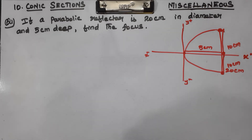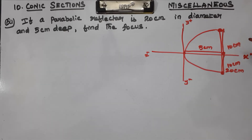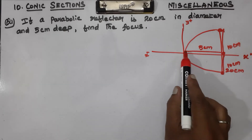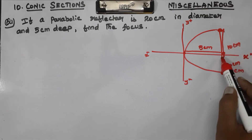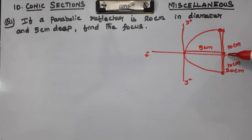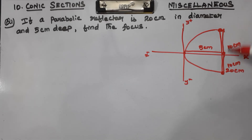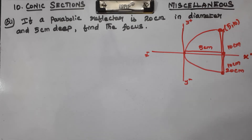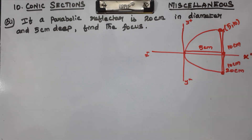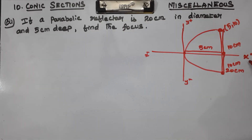5cm. Now first, let's look at this point. What is the value of this point? This is the x-axis and this is the y-axis. So the point is (5, 10). We will use this point (5, 10) in the equation.